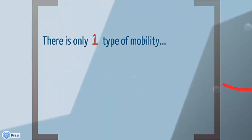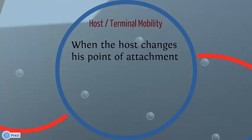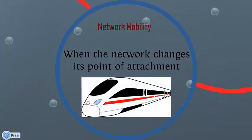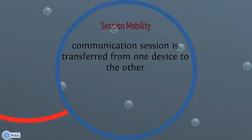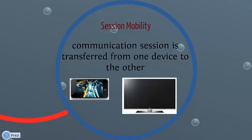There is only one type of mobility? That's wrong — there are several. We have terminal mobility, which is when the host changes its point of attachment; imagine a node associated with one access point then moving its association to another. There is network mobility, where the network changes its point of attachment — think about a train that has Wi-Fi; the actual train is the network, and as it moves along the trail it keeps changing its association. Session mobility is when a communication session is transferred from one device to another; imagine you are watching a movie on your smartphone, and when you reach your home you want to continue watching it on your TV — that is an example of session mobility.